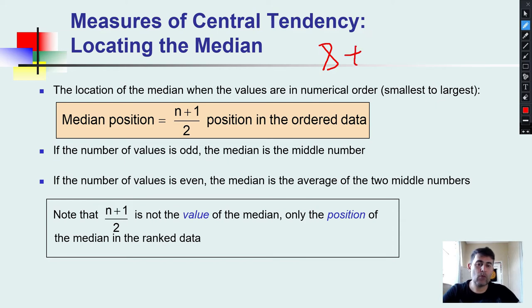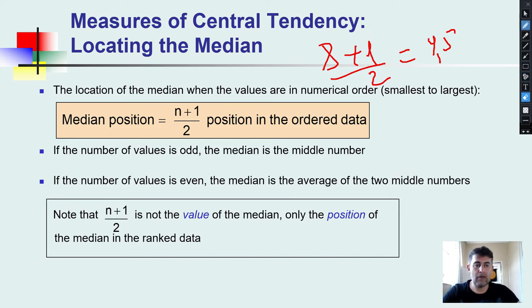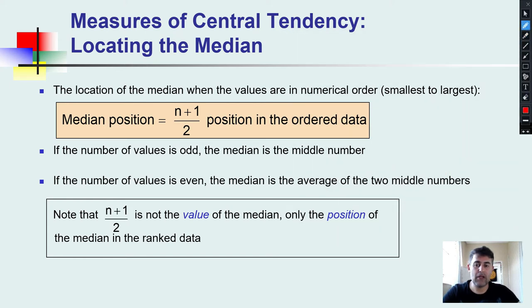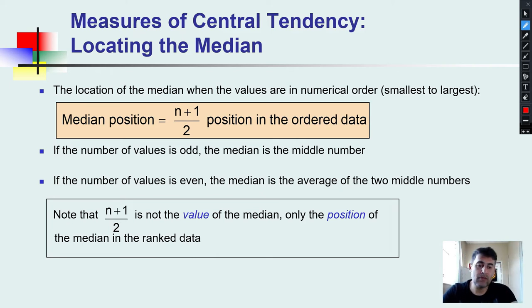But if we have 8 data points — an even number — then 8 plus 1 divided by 2 equals 4.5, meaning we take the 4th and 5th values, add them, and divide by 2. To summarize: if the number of values is odd, the median is the middle number; if even, the median is the average of the two middle numbers. Note that n plus 1 divided by 2 gives the position, not the value of the median.